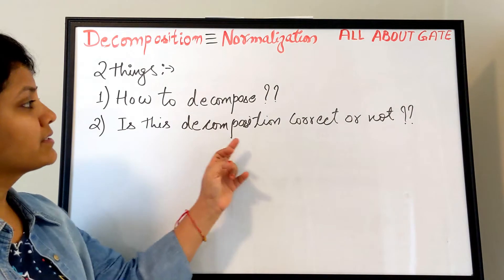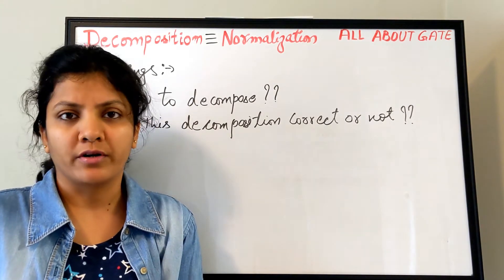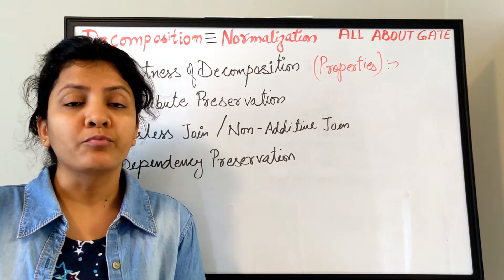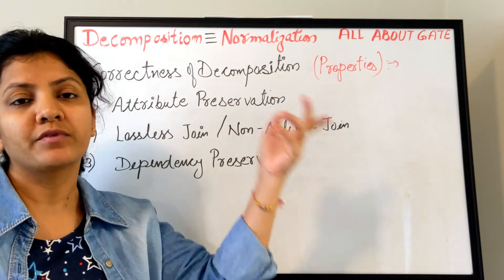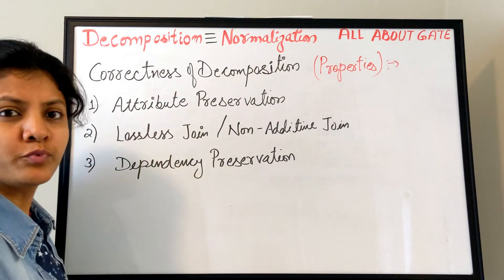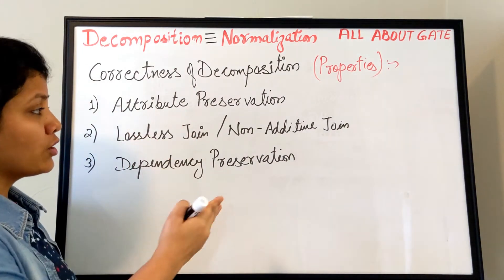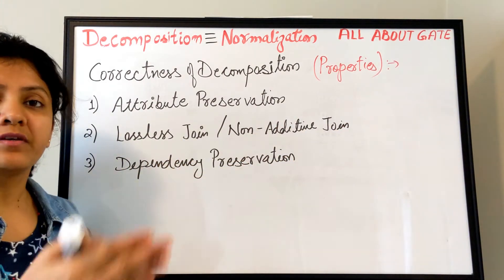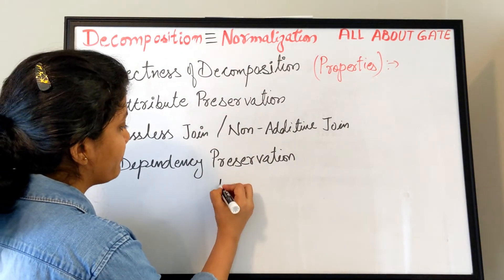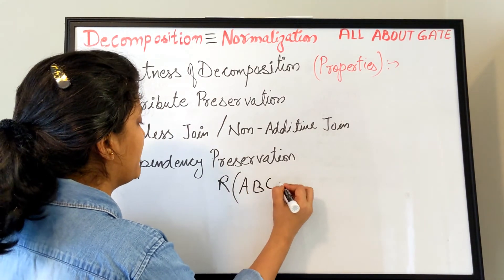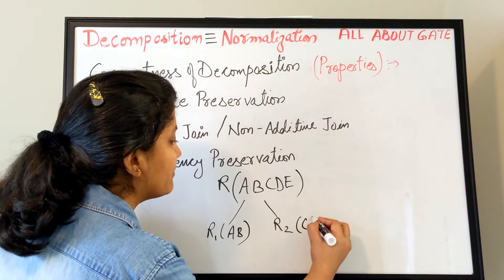The second question that arises in the mind is: is this decomposition correct or not? There should be some benchmark to check whether the given decomposition is a correct one or not. Before we go for the 'how to decompose' part, let's understand the properties of decomposition — how to check the correctness of the decomposition. We have basically two properties, but I have named a third one which is very essential. The first is attribute preservation, then lossless join (or non-additive join), and the third is dependency preservation. Let's understand attribute preservation: suppose we have relation R with multiple attributes — say five attributes A, B, C, D — and I decompose it into R1 having A, B and R2 having C, D.